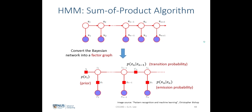Now let's show that the forward-backward algorithm, or the inference of the HMM algorithm, can be done using the sum-product algorithm on the factor graph.